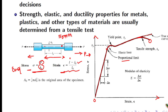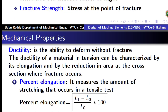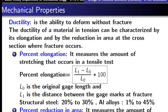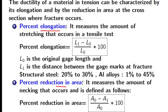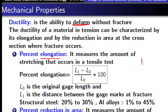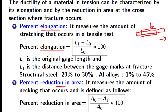Ductility is the ability of a material to deform. More specifically, it is measured using two parameters: percent elongation and percent reduction in area. As you stretch the specimen, its length increases while its diameter decreases. The first measure, percentage elongation, is calculated as (final length minus initial length) divided by initial length, multiplied by 100 to express it as a percentage.